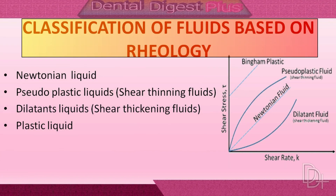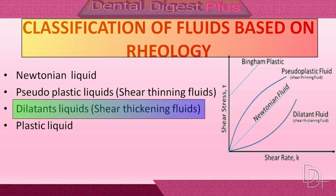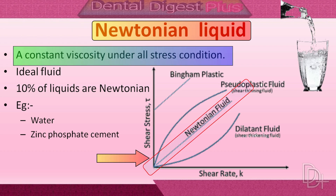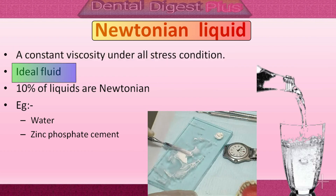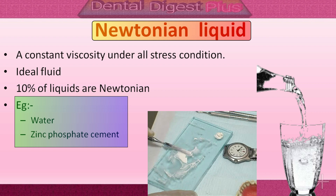Fluids can be classified based on rheology using a shear stress vs. shear strain graph into four types: Newtonian liquid, pseudoplastic, dilatant, and plastic fluid. Newtonian liquids exhibit constant viscosity under all stress conditions — they are ideal fluids where shear stress is proportional to strain rate. Only about 10% of liquids are Newtonian; examples include water and newly mixed zinc phosphate cement.